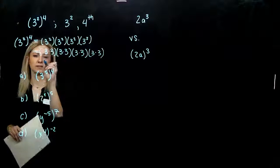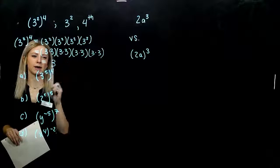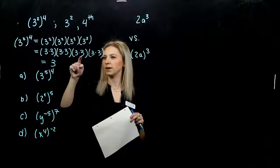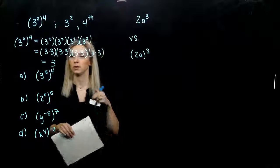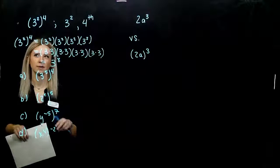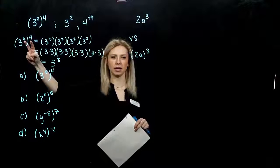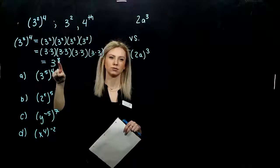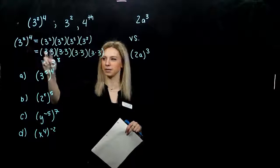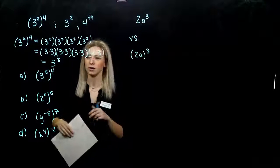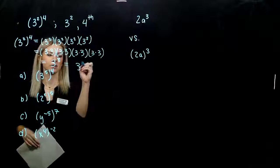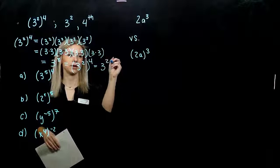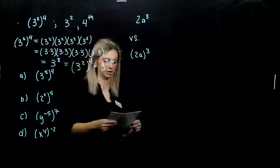How can I write this concisely? How many factors of three do I actually have? Counting them all together: eight. So how is the relationship related in the beginning? If I add those two exponents, do I get eight? No. But if I multiply them together — two times four — I get eight. So when we raise a power to a power, we multiply the exponents together. This is really three raised to the two times four.